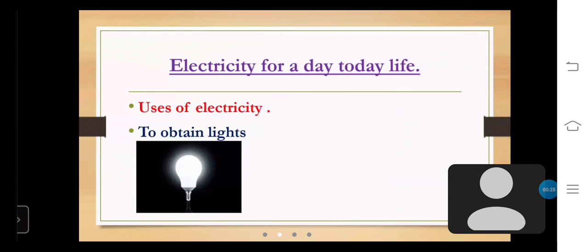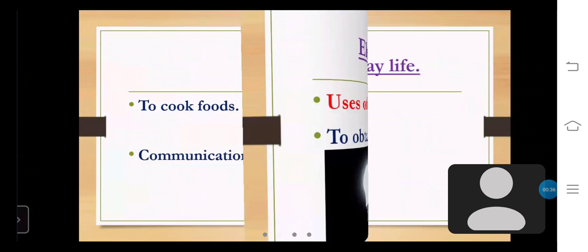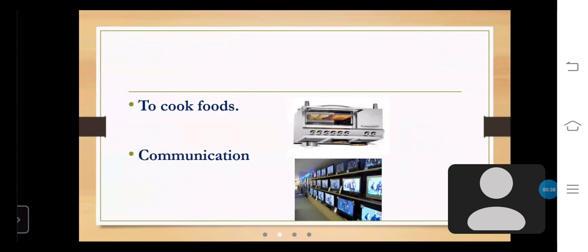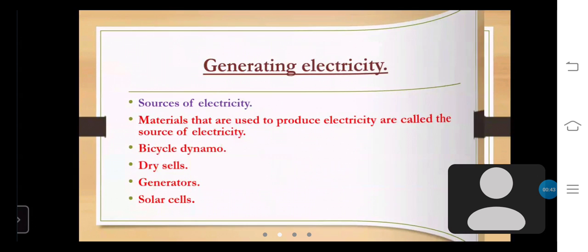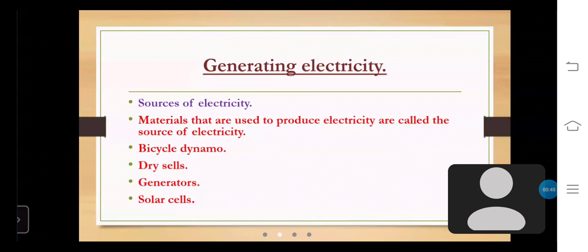First, electricity for day-to-day life. Uses of electricity: It has so many circuits to open lights, for example bulbs, to cook food, electric cooker, for communication, radio, etc.